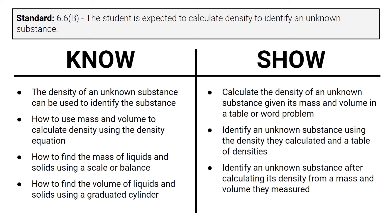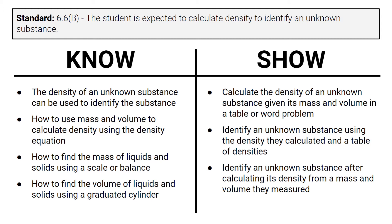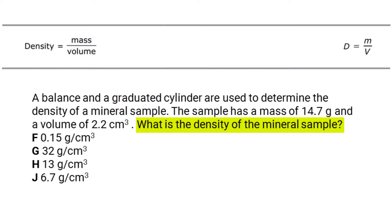The student is expected to calculate density to identify an unknown substance. So students need to know that the density of an unknown substance can be used to identify the substance — that is directly from the standard itself, and it is exactly how students are assessed on this content. Students will also need to know how to use mass and volume to calculate density using the density equation and a scalar balance. This is a clear expectation of the standard and a part of every STAR question we've seen.